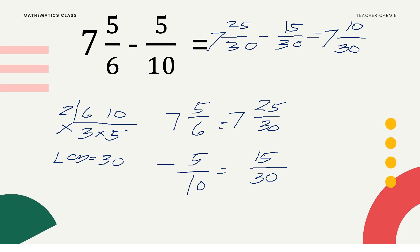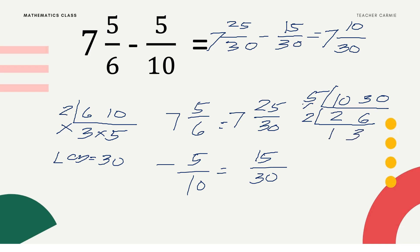Can we stop at 7 and 10/30? Not yet, since 10 and 30 can be reduced to lowest terms. Find the GCF of 10 and 30. Both are divisible by 5: 10 divided by 5 is 2, and 30 divided by 5 is 6. Again, both divisible by 2: 2 divided by 2 is 1, and 6 divided by 2 is 3. So the lowest term denominator is 3. Don't forget to write the whole number. The final answer is 7 and 1/3.